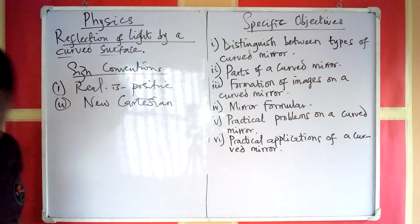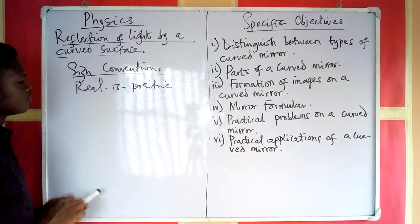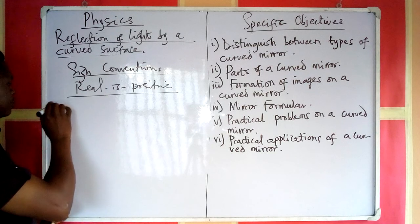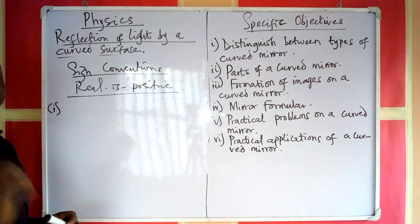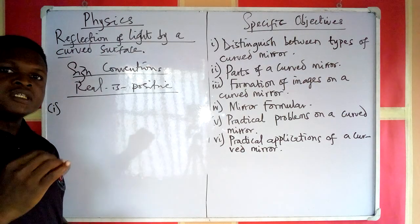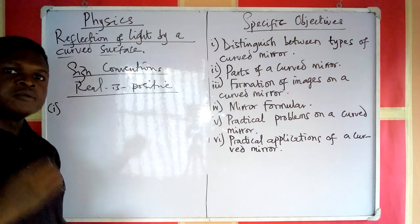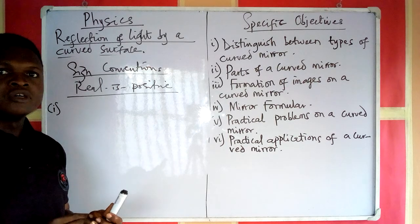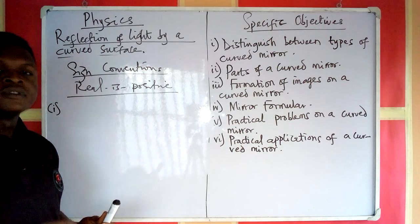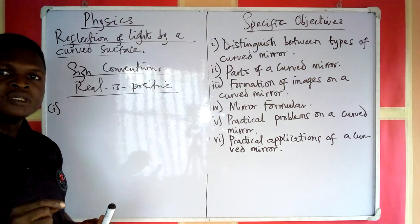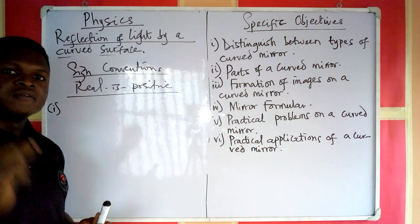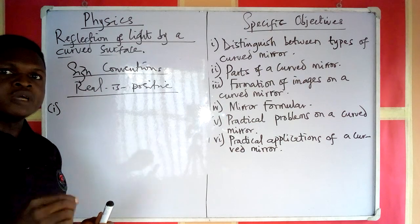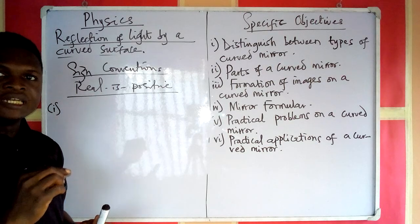Talking about the real-is-positive sign convention, the rules are: rule one — real objects and real images are taken to be at positive distance from the mirror. So whenever you have a real image or real object, you take it to be positive. Rule two — virtual images are taken to be at negative distance from the mirror. So if you have a virtual image, you give it a sign convention of negative.